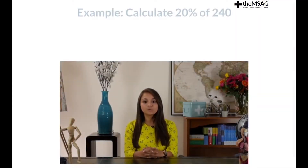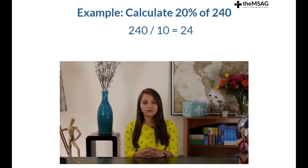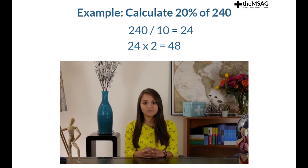For example, to work out 20% of 240, the easiest way is to first calculate that 10% of 240 equals 24. Remember, finding 10% just means dividing by 10. If 10% equals 24, then 20% equals 48 — we just multiply the 10% by 2. It may sound obvious, but far too many candidates will waste valuable time on test day by opening the calculator for a simple question like this.